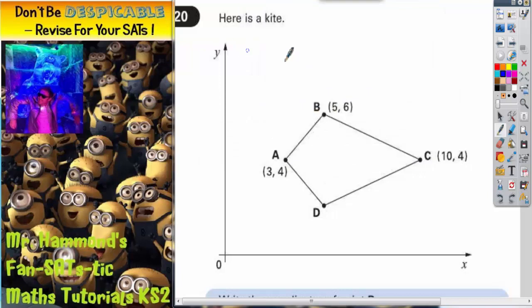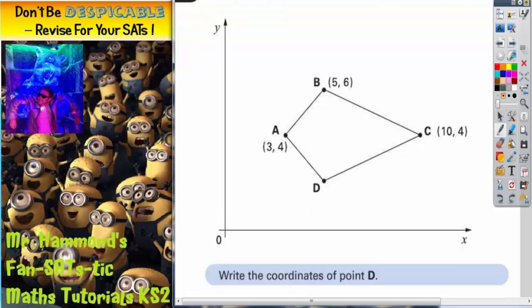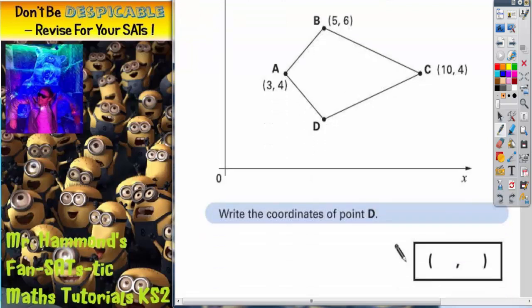Question 20. Here is a kite with some coordinates on it. It says write the coordinates of point D. Now that sounds easy, but it sounds easier than it looks.